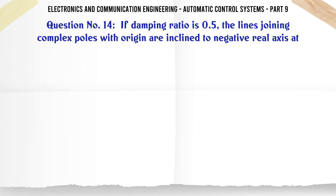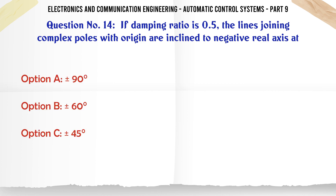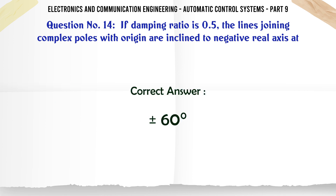If damping ratio is 0.5, the lines joining complex poles with the origin are inclined to the negative real axis at: A. 90°, B. 60°, C. 45°, D. 30°. The correct answer is: 60°.